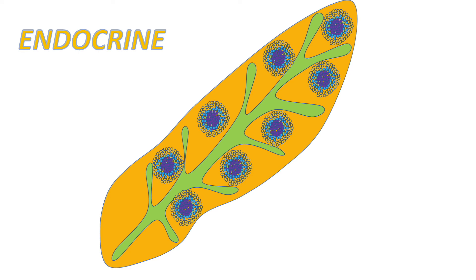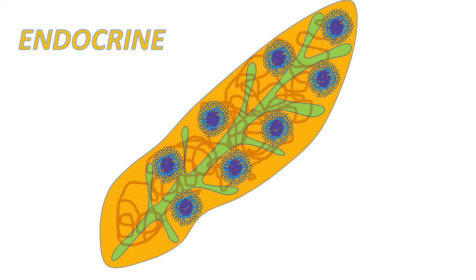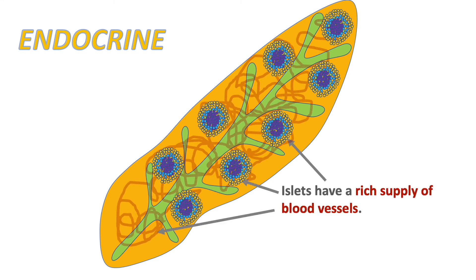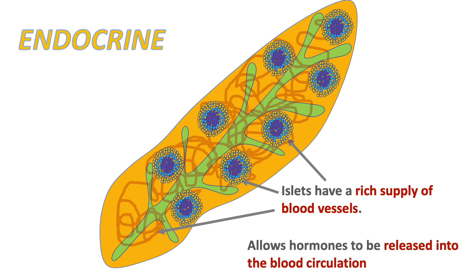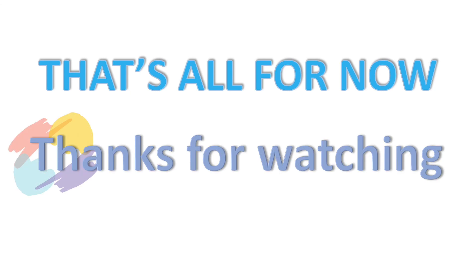The islets are surrounded by a rich supply of blood vessels. This is important so that when the beta cells and alpha cells release their hormones, those hormones can directly enter the blood circulation and reach their target tissue. That concludes the presentation — I hope you found this helpful and thanks for watching.